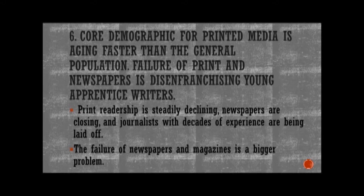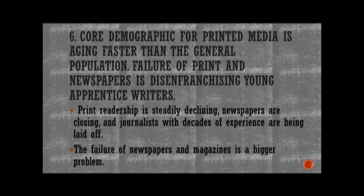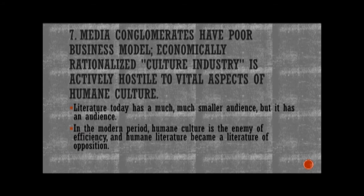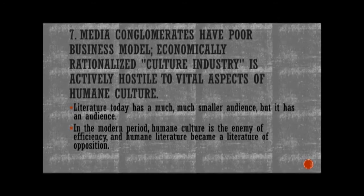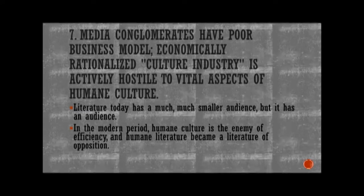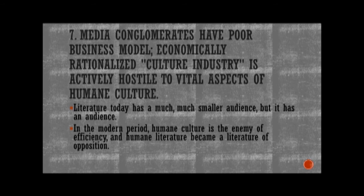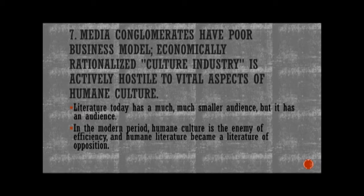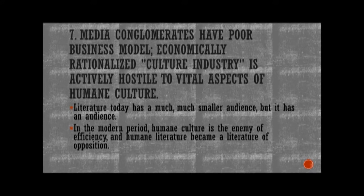Number seven: Media conglomerates have a poor business model. Economically rationalized culture industry is actively hostile to vital aspects of humane culture. Literature today has a much smaller audience, but it has an audience. In the modern period, humane culture is the enemy of efficiency and humane literature became a literature of opposition. Media companies are not gaining enough audiences, and media strategic planning does not meet the audience's interests. Offline mass media entertainment is very harsh to humane culture and ethical disciplines.